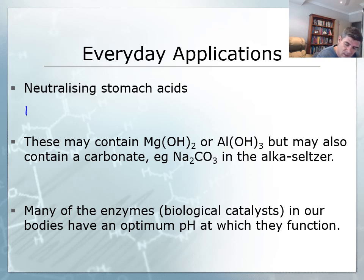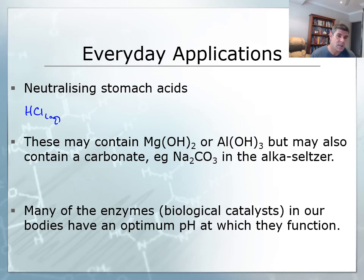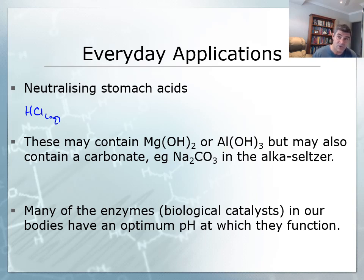In our stomachs, we produce hydrochloric acid at quite a high concentration, and this is very important for protein digestion. pH is a very important component of many of our different body systems. Different types of biochemical reactions have optimum levels of performance at different pH values — not all of them at a neutral pH of 7. Somewhere like the stomach where protein digestion occurs, the enzymes involved work best in a very strongly acidic environment. So we secrete quite concentrated hydrochloric acid in order to achieve this.